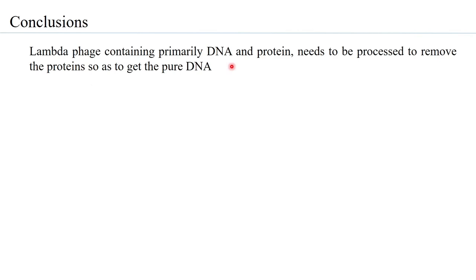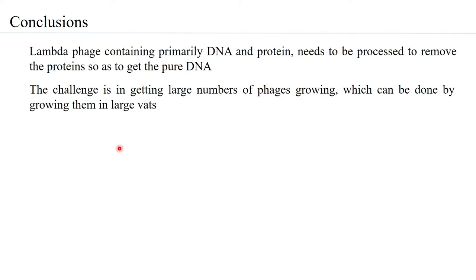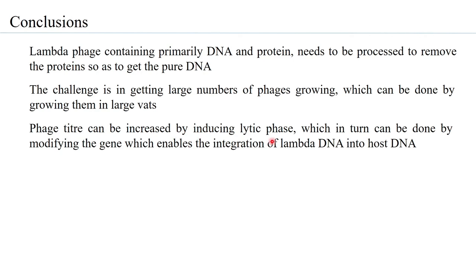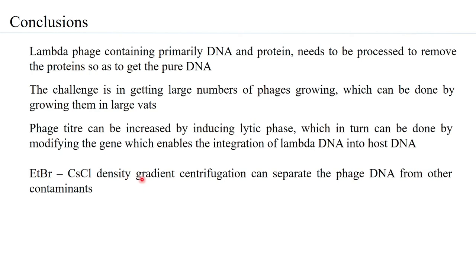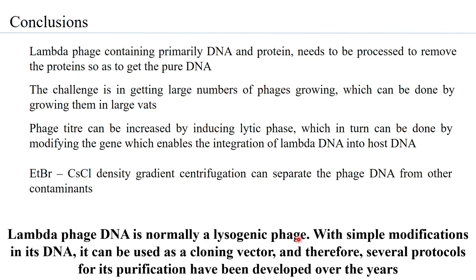In conclusion, lambda phage contains primarily DNA and protein and needs to be processed to remove the protein so as to get pure DNA. The challenge is getting large numbers of phages, which can be done by growing them in large vats. Phage titer can also be increased by inducing the lytic phase, which can be done by modifying the CI gene that enables integration of lambda DNA into host DNA. EtBr-CsCl density gradient centrifugation can separate the phage DNA from other contaminants. Lambda phage DNA is normally in a lysogenic phase, but with simple modifications it can be used as a cloning vector, and several protocols for its purification have been developed over the years.